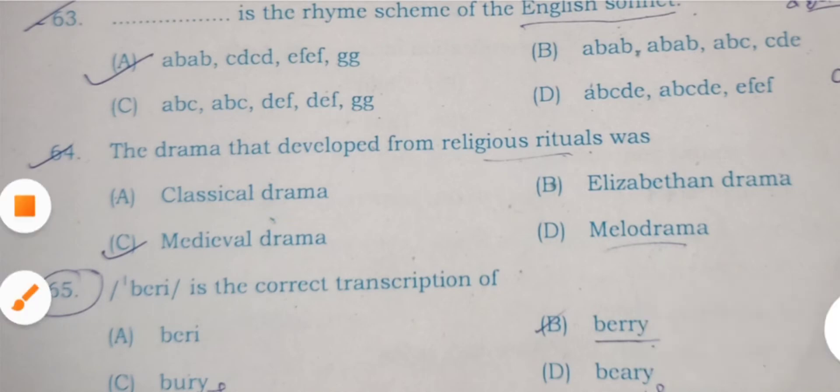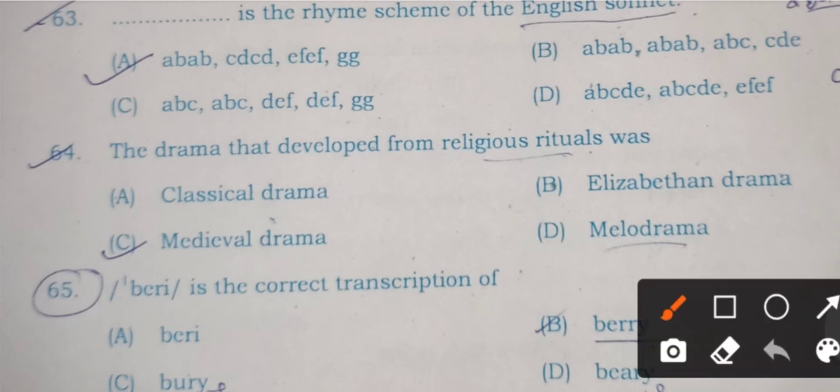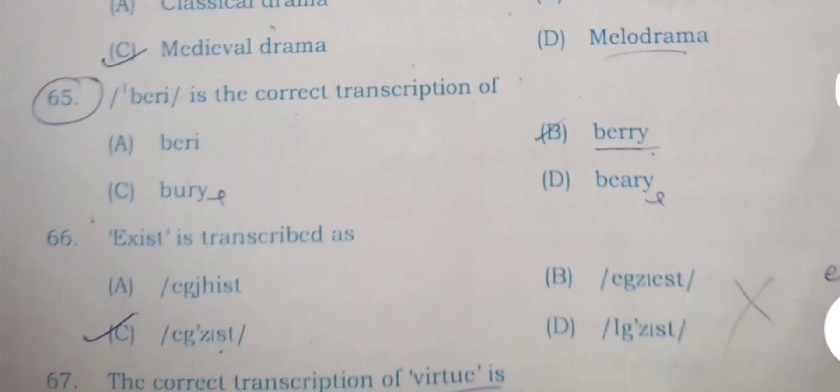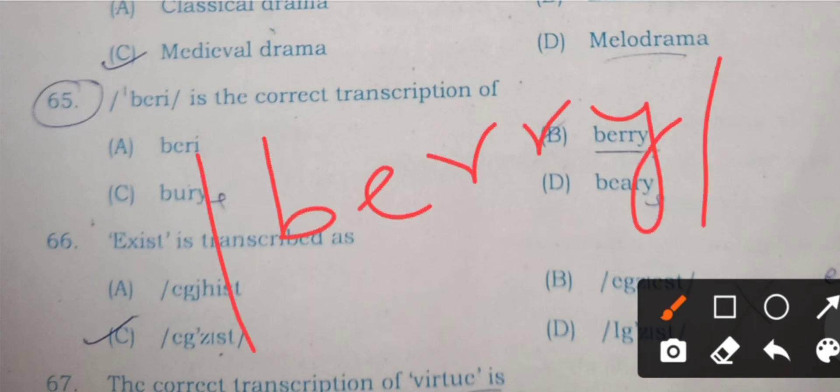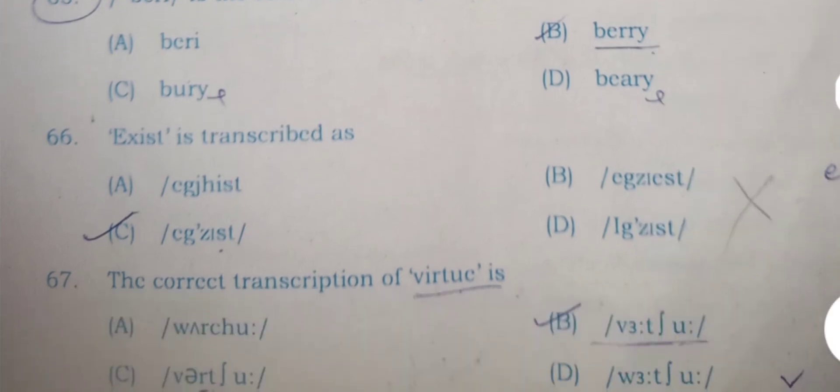Question 65: Berry - its pronunciation is given. Berry is the correct transcription. The word will be B-E-double R-Y. Its pronunciation is berry. Here B is the right answer in 65.